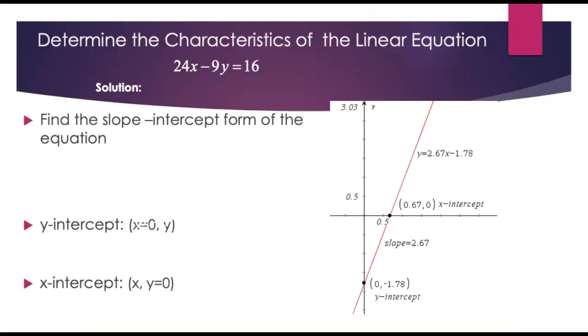So let's look at an example. In our problem here, we've got 24x minus 9y equals 16, and we're trying to find the characteristics of this linear equation. The first thing we're asked to do is to find the slope intercept form of the equation. And to do that, we've got to solve for y.